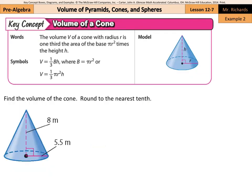Volume of a cone. The volume V of a cone with radius R is one-third the area of the base, pi r squared, times the height h. So volume equals one-third area of the base times the height, just like our pyramids, except our base is a circle. So one-third pi r squared times h.